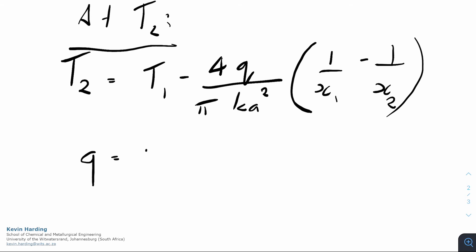If we rearrange this equation at t2 such that we have q as the subject of the formula, we can write q as t1 minus t2 multiplied by pi k a squared divided by the 4 that we had from the 4q, and now this would be multiplied by 1 on x1 minus 1 on x2.